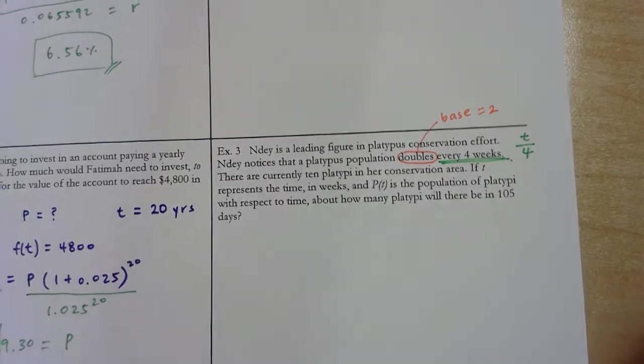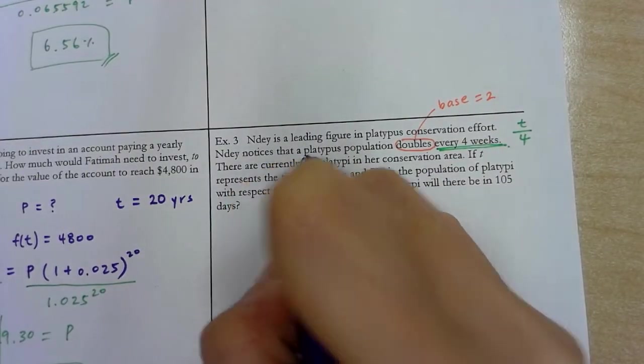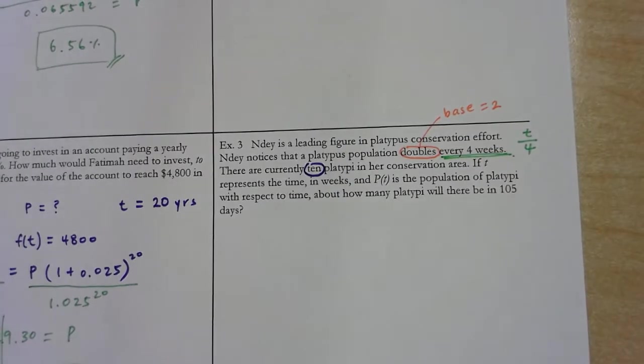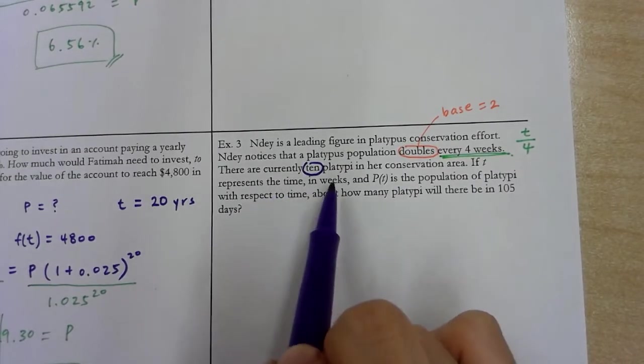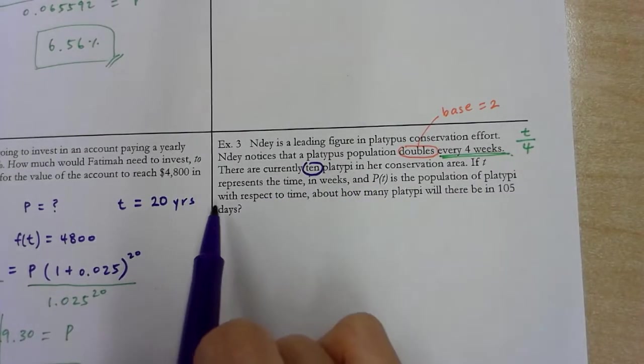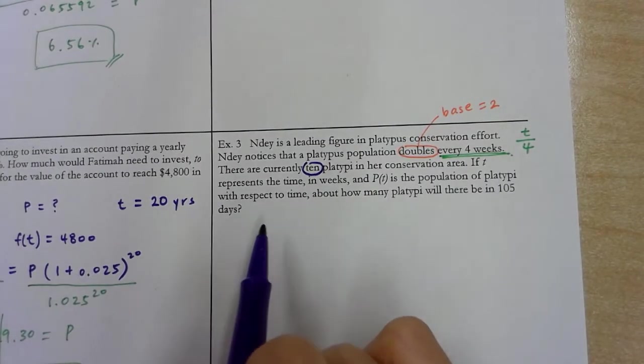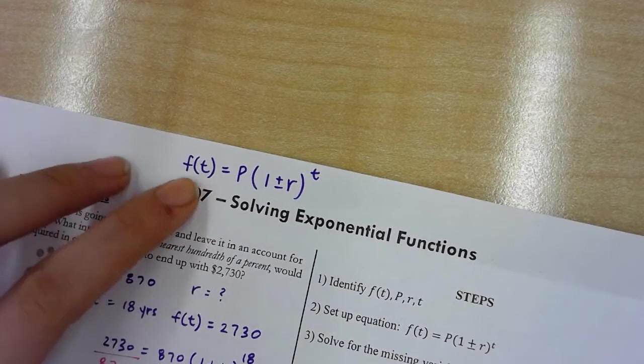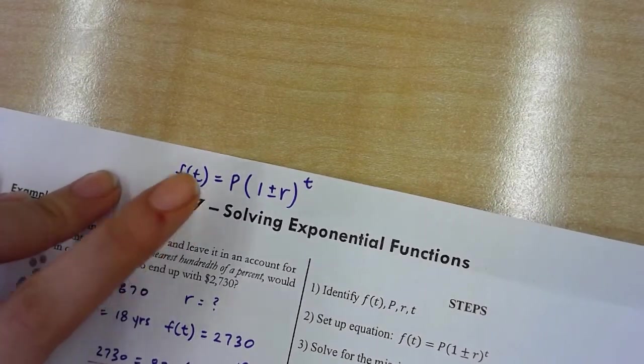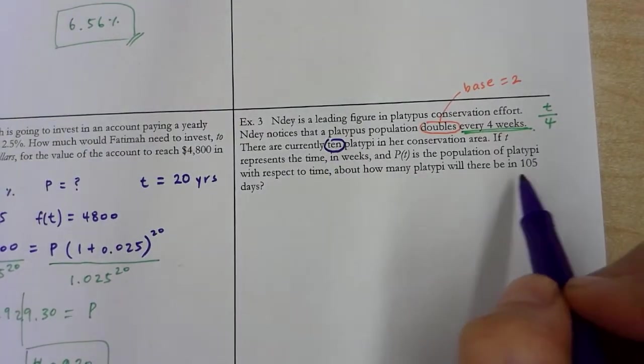And then there are currently 10 platypus. So I realized that many people got tripped up that 10 is actually represented P, not f(t). Let's just think about this for a second. Continue reading it. T represents time in weeks. That's the population with respect to time. How many platypus will there be in 105 days? So I think what I could have done better is instead of defining this as a current amount, we should have defined it as amount left after t time.